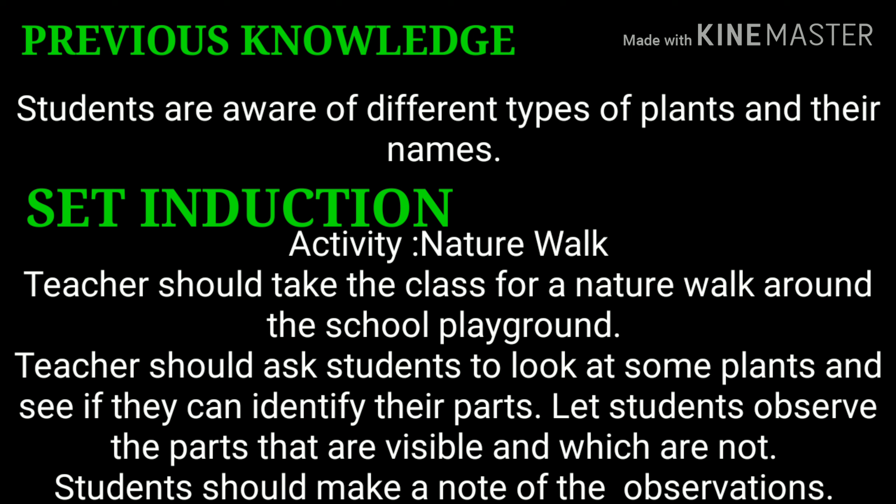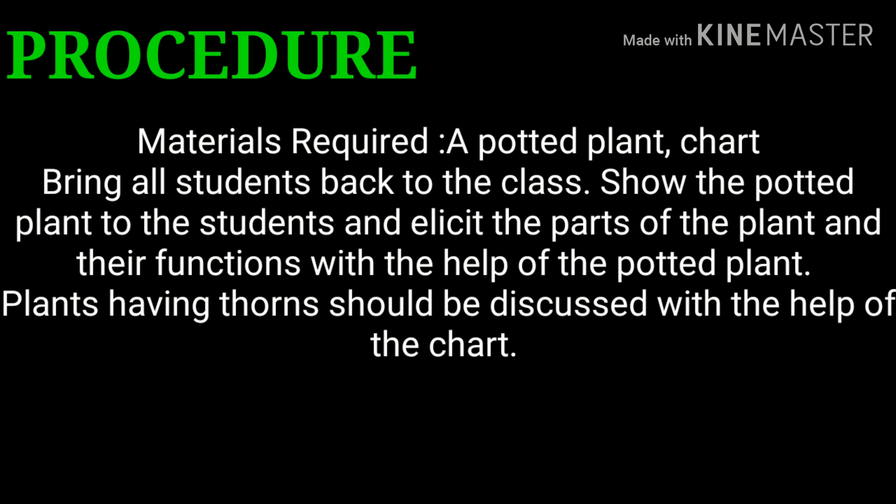Let students observe the parts that are visible to them and which are not. Students should make a note of their observations in their rough book. Then comes the procedure. The materials required will be a potted plant and a chart showing the parts of the plant.